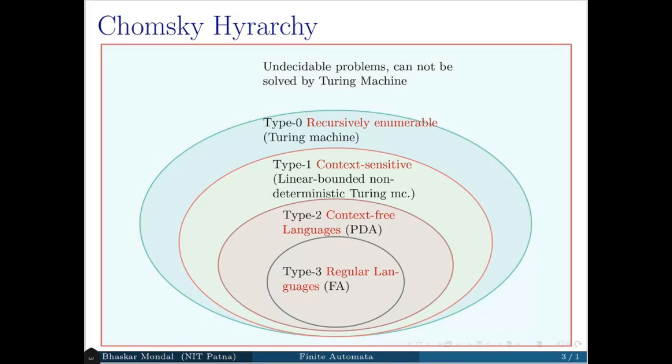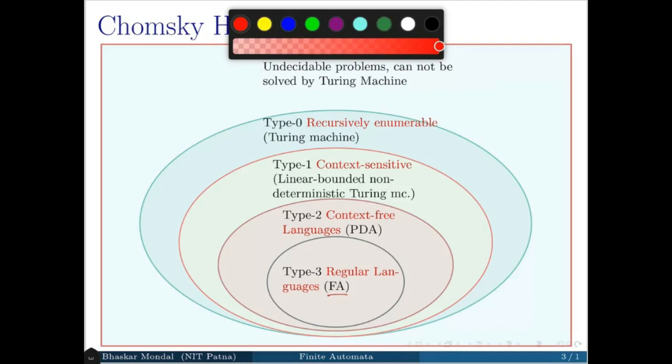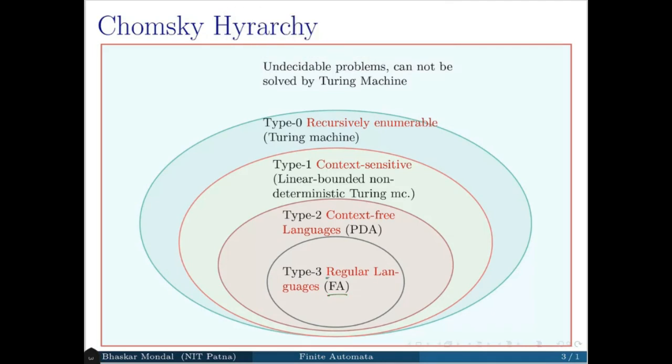Here you can see the Chomsky hierarchy of languages. I have mentioned in the bracket what kind of language is accepted by what kind of automation. Finite Automata is here. What languages are acceptable by Finite Automata? Regular languages. So we are speaking about regular languages only in this course. We are less concerned about the other three types of languages like context free language, context sensitive language, recursively enumerable language. We are not going to discuss all these things.